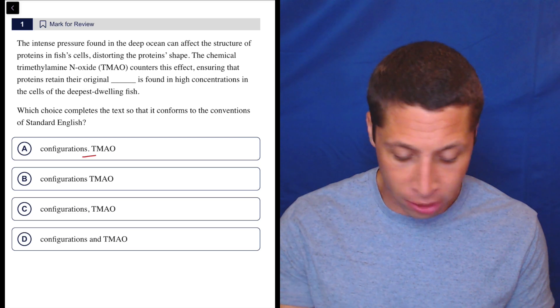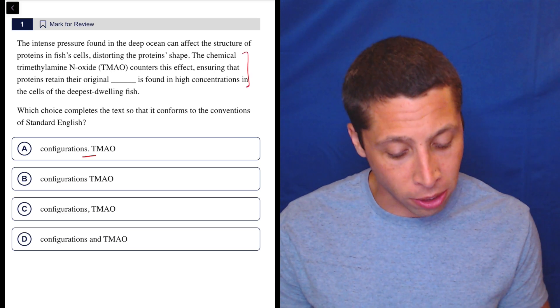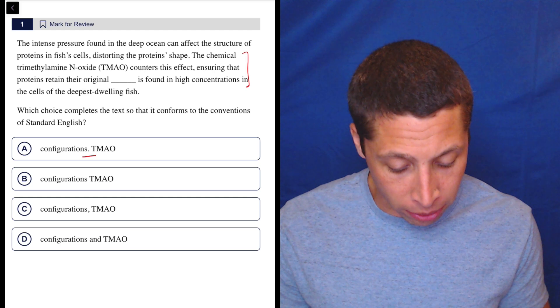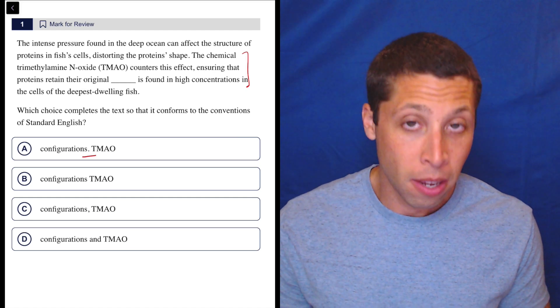I'm not going to worry about these commas and the conjunction 'and.' Let's look for sentences. So let's start here where the sentence starts. The chemical whatever counters this effect, ensuring that proteins retain the original configurations.